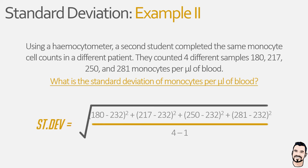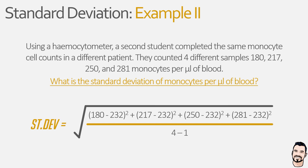So x minus x-bar becomes our data values minus the mean data value, which is our deviation, repeated for each data value, and n becomes the number 4 as this is the number of data values observed. Again, to make things easier, we can start simplifying this equation by calculating everything in the brackets on the top line of the equation.